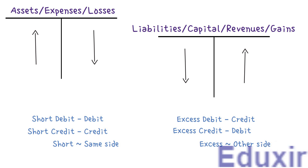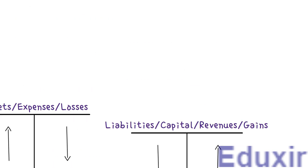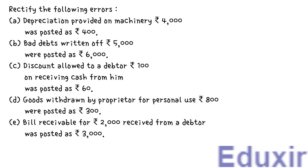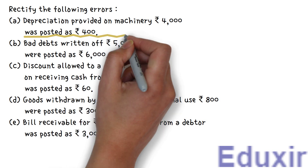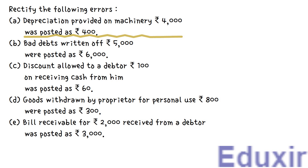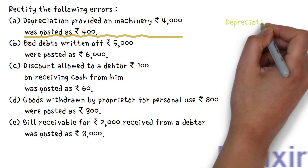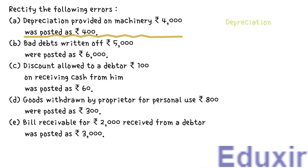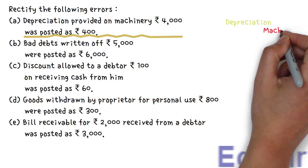With this information at our disposal, let us now proceed with the analysis of each of the errors in the given problem. Starting with error A: 4,000 rupees of depreciation provided on machinery was wrongly posted as 400 rupees. Depreciation is an operating expense, so we should debit the depreciation account with 4,000 rupees. At the same time, as the machine is depreciated, the worth of the machinery will be decreasing, so we should credit the machinery account with 4,000 rupees.